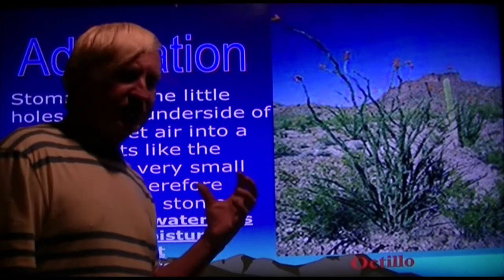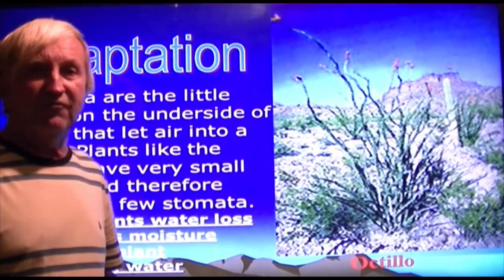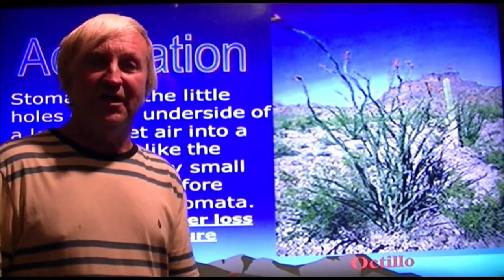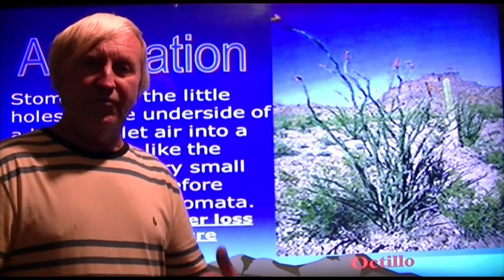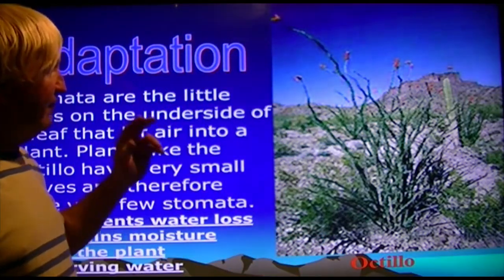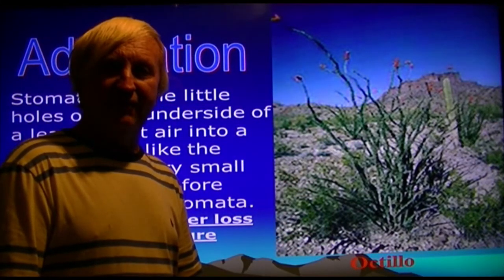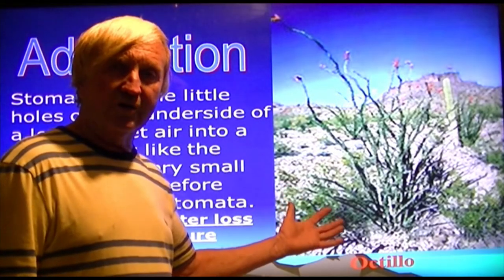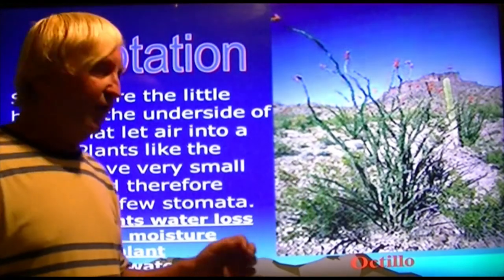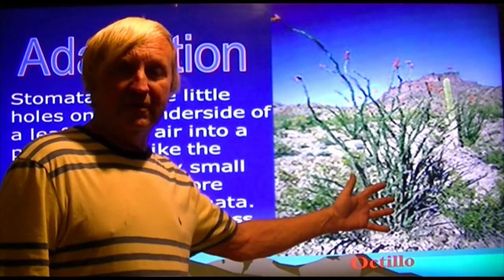Since precipitation in deserts varies between almost none and an average of six inches per year, and most rain occurs in very short periods — they might receive one inch of their six-inch annual allotment in 30 minutes from a big thunderstorm — these plants must really absorb that rainfall. They have very small leaf structures and very small stomata. Evapotranspiration is how moisture is released by plants through stomata into the atmosphere as water vapor.